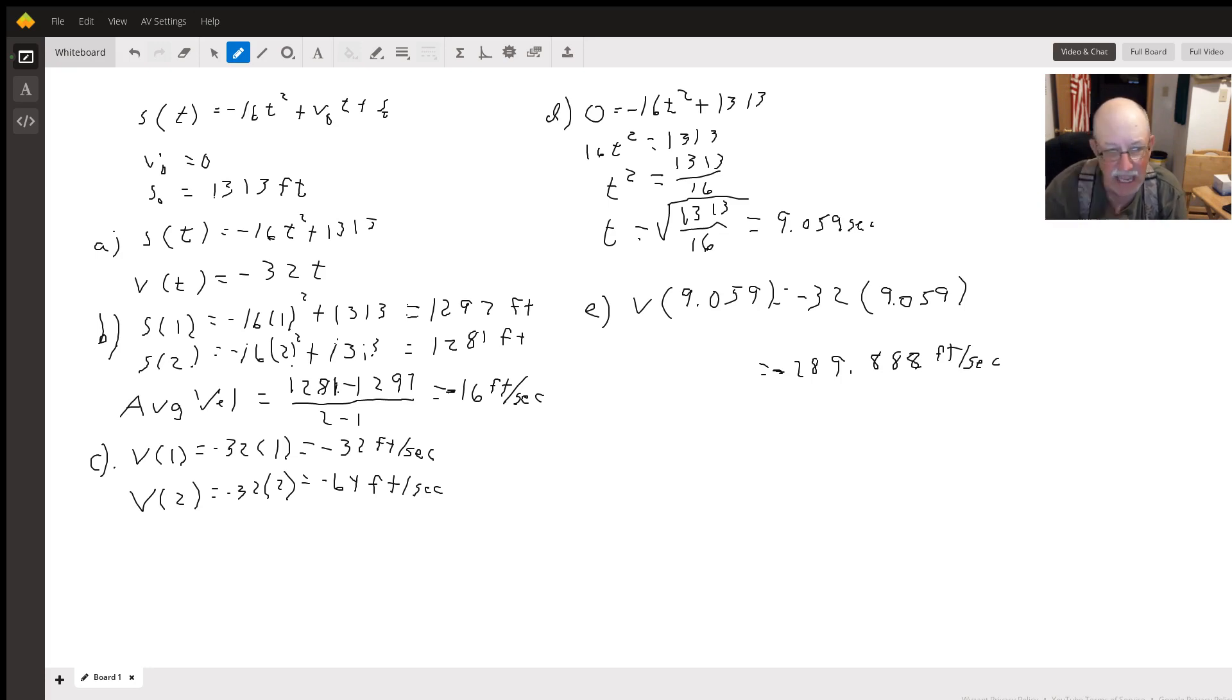For s(2), we get 1281. To find the average velocity, we take the difference between the heights divided by the difference in the times. 1281 - 1297 is -16, and 2 - 1 is 1, so we get -16 feet per second. It's negative because the coin is going down.